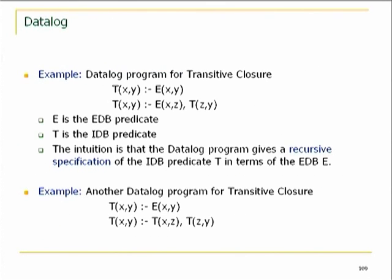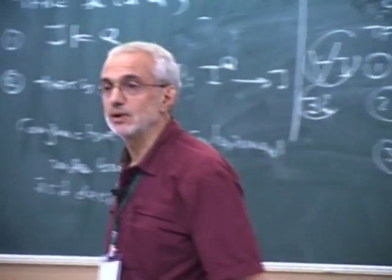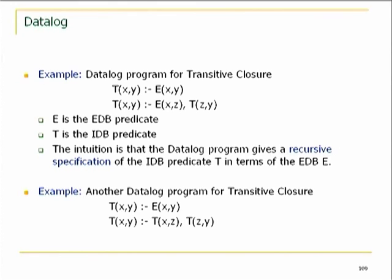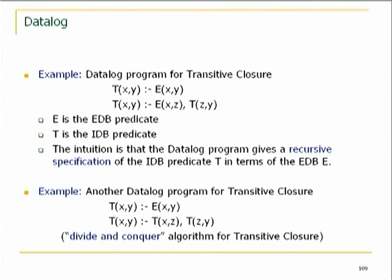Here is the transitive closure as a datalog program with two rules. T says there is a path from X to Y: there is a path if there is an edge from X to Y, or there is a Z with an edge from X to Z and a path from Z to Y. We can also have a program with two recursive predicates: Odd says there is a path of odd length from X to Y, and Even says there is a path of even length.